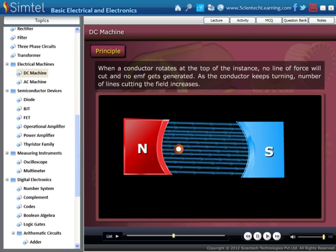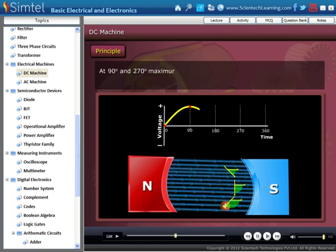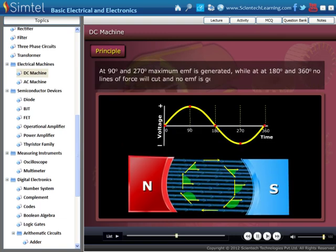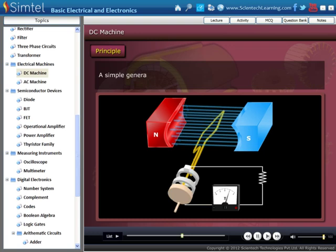When a conductor rotates at the top of the instance, no line of force will cut and no EMF gets generated. As the conductor keeps turning, number of lines cutting the field increases. At 90 and 270 degrees, maximum EMF is generated. While at 180 and 360 degrees, no lines of force will cut and no EMF is generated.